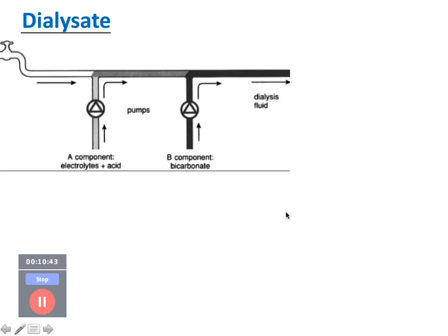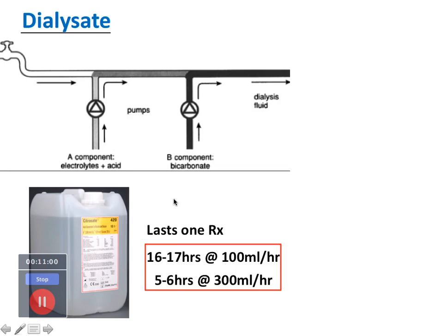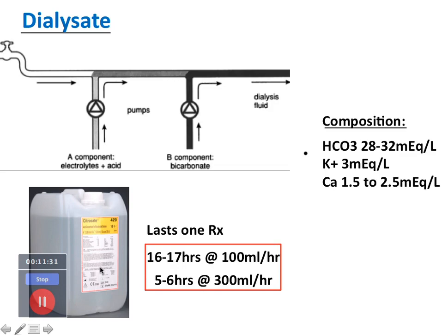For dialysate preparation, there is continuous inline preparation using RO water with one line carrying electrolytes and acid, and a second line carrying bicarbonate — both get mixed to form dialysate. Alternatively, canisters are used; a canister lasts for one treatment — about 16 to 17 hours at 100 ml/hr flow, or 5 to 6 hours at 300 ml/hr. Most tertiary referral hospitals have inline preparation; otherwise canisters are used. Typical dialysate composition: bicarbonate 28–32 mEq/L, potassium 3 mEq/L, calcium 1.5–2.5 mEq/L.